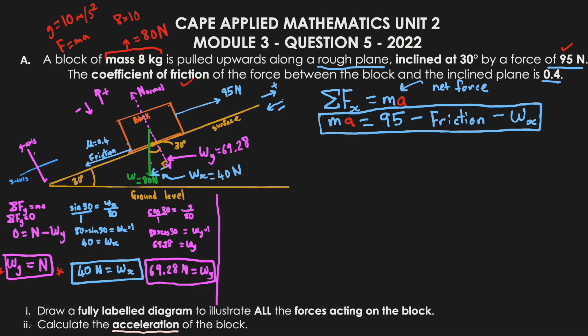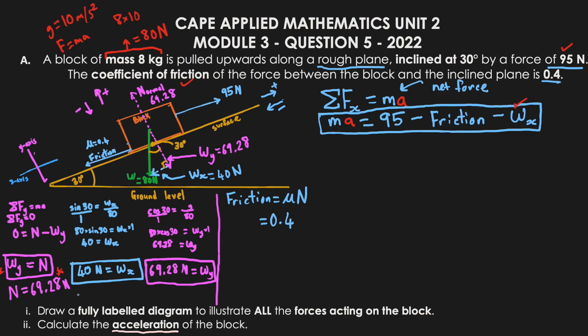We now have both components of the gravitational force: Wx = 40 N and Wy = 69.28 N. From our earlier y-direction analysis, N = Wy = 69.28 N. We can now find friction: f = μN = 0.4 × 69.28 = 27.71 newtons.